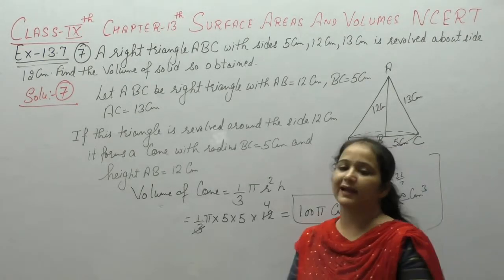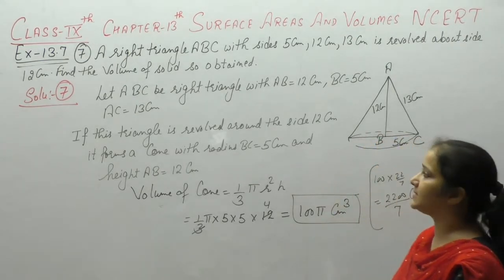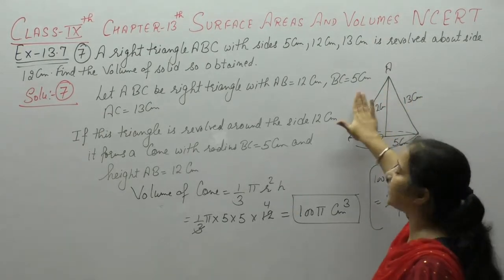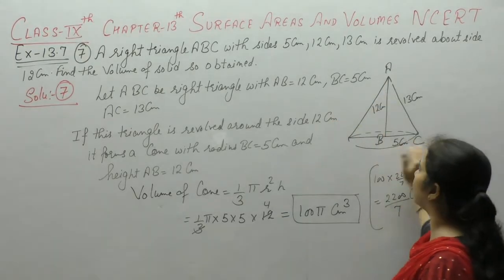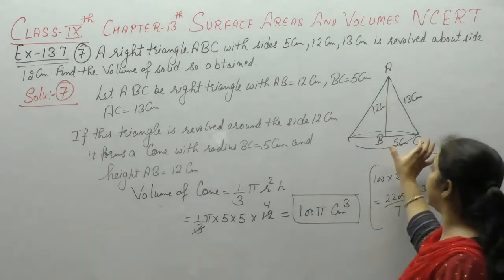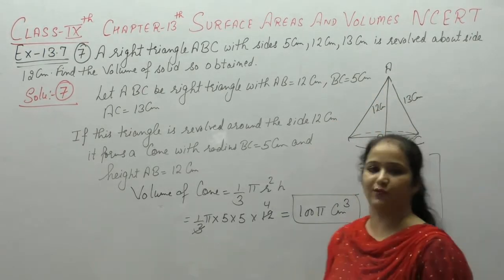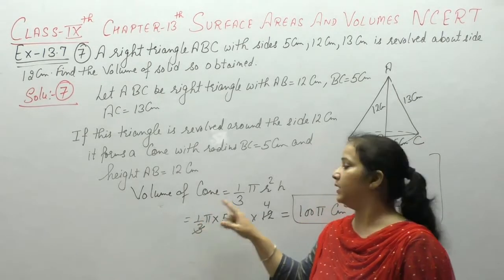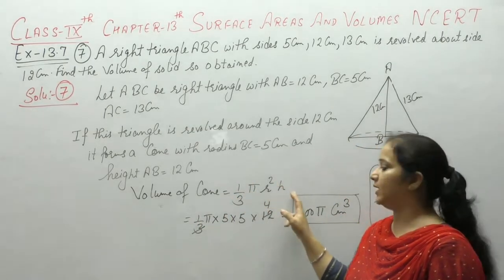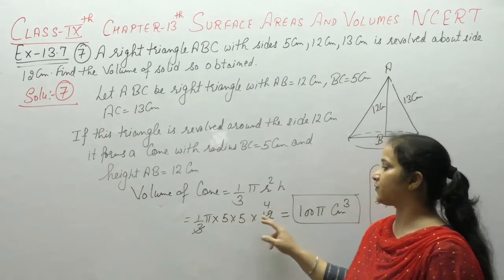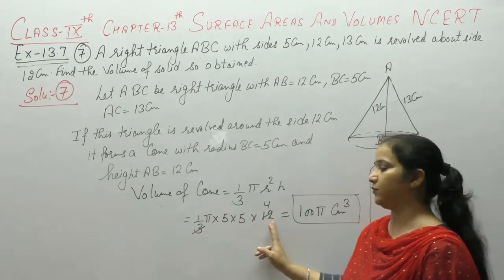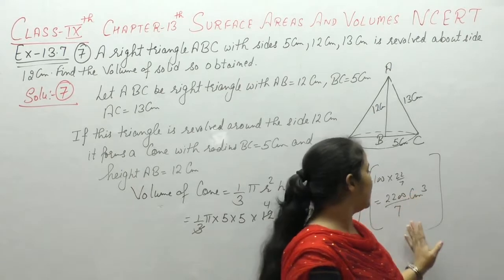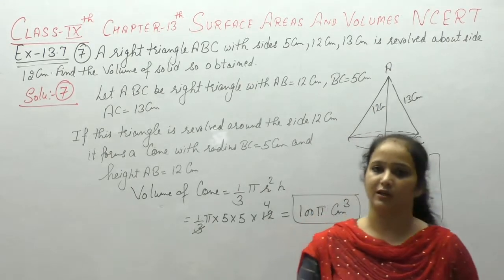We have said that a right triangle is ABC, which side is 5, 12 and 13. If this side is 12 cm around revolve, which is called a cone, whose radius is 5 and height is 12. So the volume of the solid obtained, which is called a cone, the volume of the cone is 1 by 3 pi r square h. Pi radius is 5, height is 12, 3 fours are 12, 25 into 400 pi cm³ or 2200 upon 7 cm³.